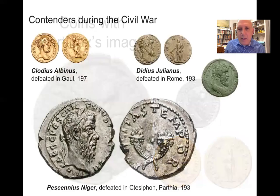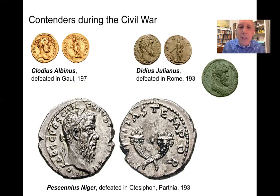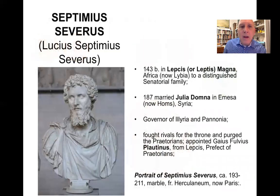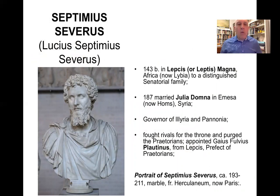Here are some coins with the image of Pertinax, and a series of coins showing the contenders who aspired to the Roman throne, including Clodius Albinus, Didius Julianus, and Pescennius Niger. All these individuals were generals who fought each other for the right to rule and win over the hearts of the Romans and the Senate. The figure who came out victorious in this civil war was Septimius Severus, the man who lends his name to the Severan dynasty.